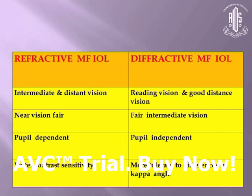The basic difference between the diffractive and refractive lenses is that diffractive lenses provide excellent near vision and good distant vision with fair intermediate vision, and they are pupil independent, whereas the refractive lenses provide better intermediate vision and are pupil dependent.